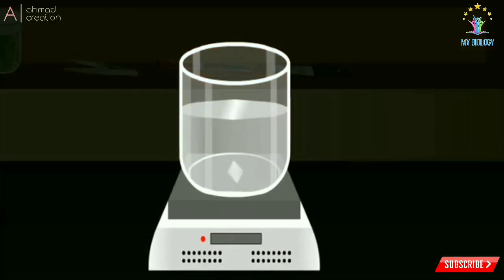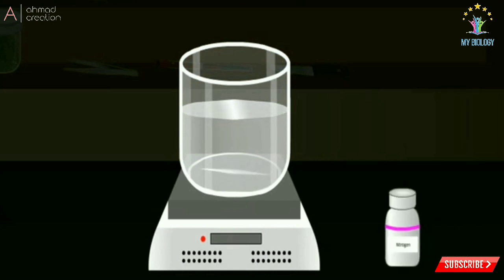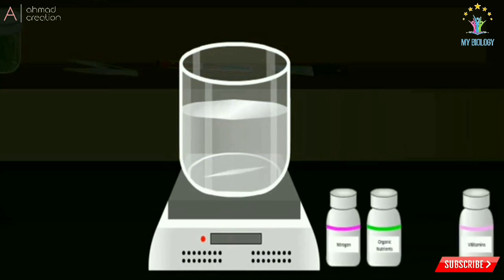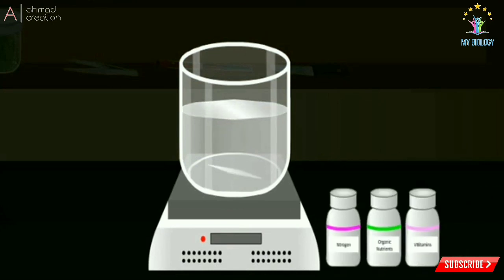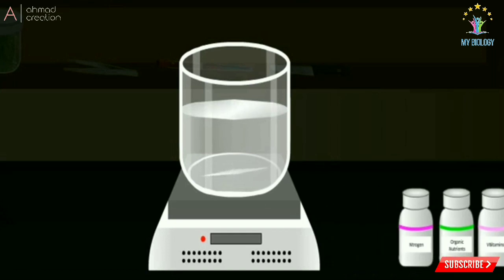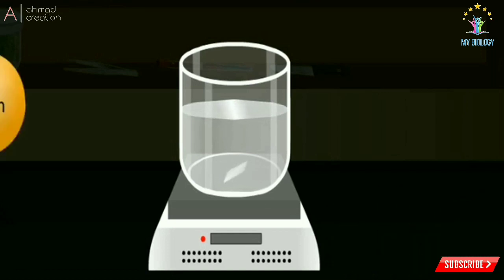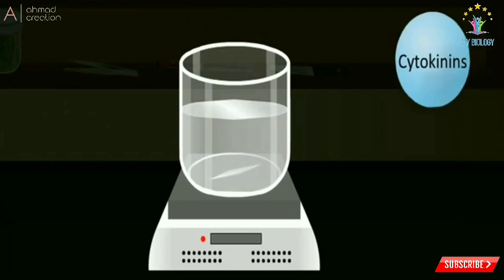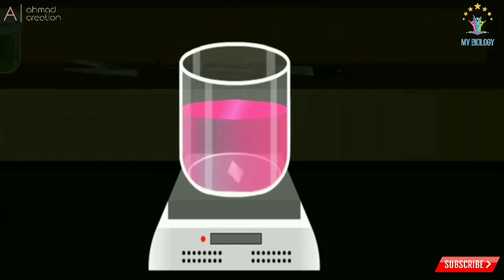Tissue culture technique requires a liquid medium that contains inorganic nutrients like carbon, potassium, and nitrogen, organic nutrients like amino acids, and vitamins like vitamin B1. Growth regulators like auxins, gibberellins, and cytokinins are added to promote growth.